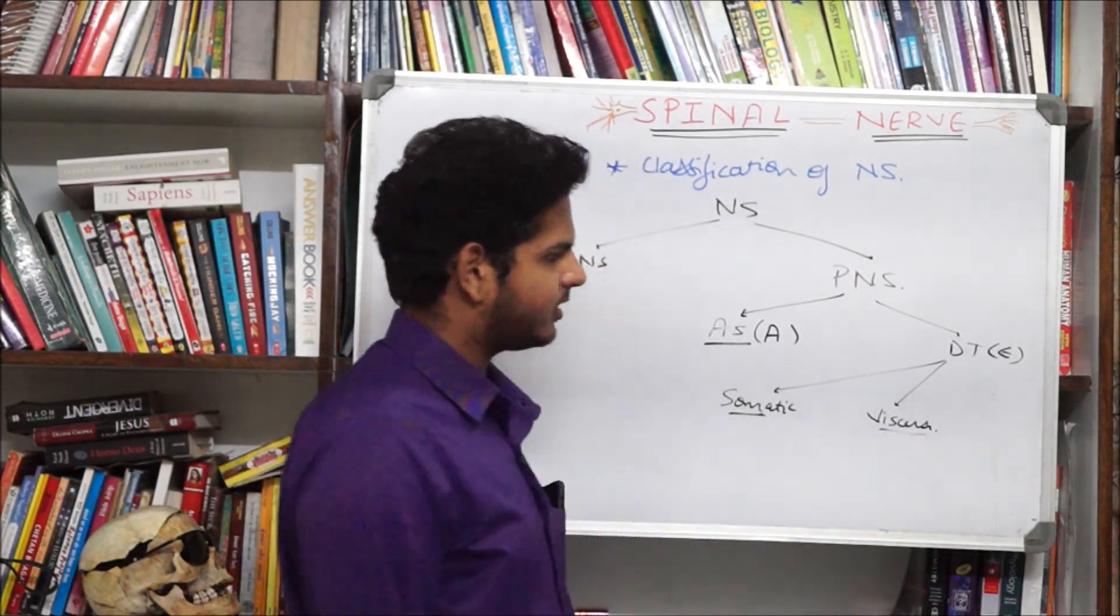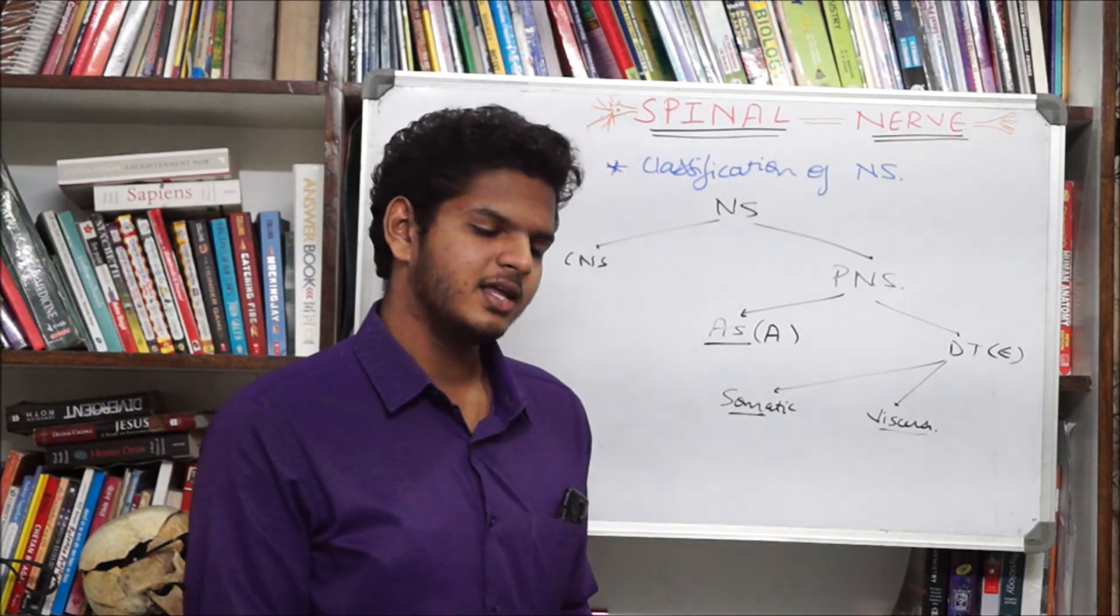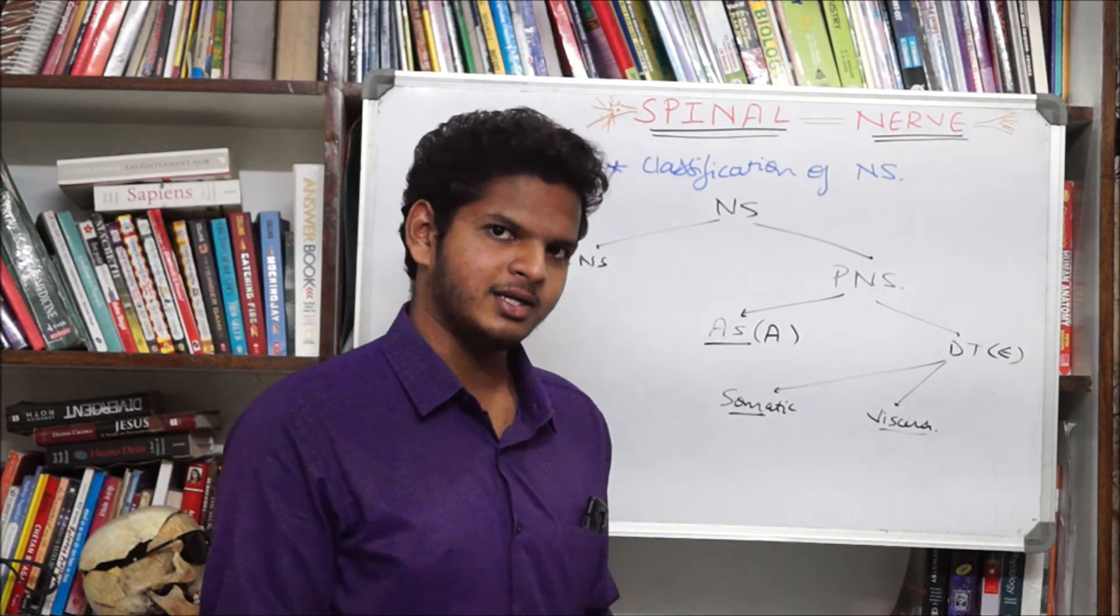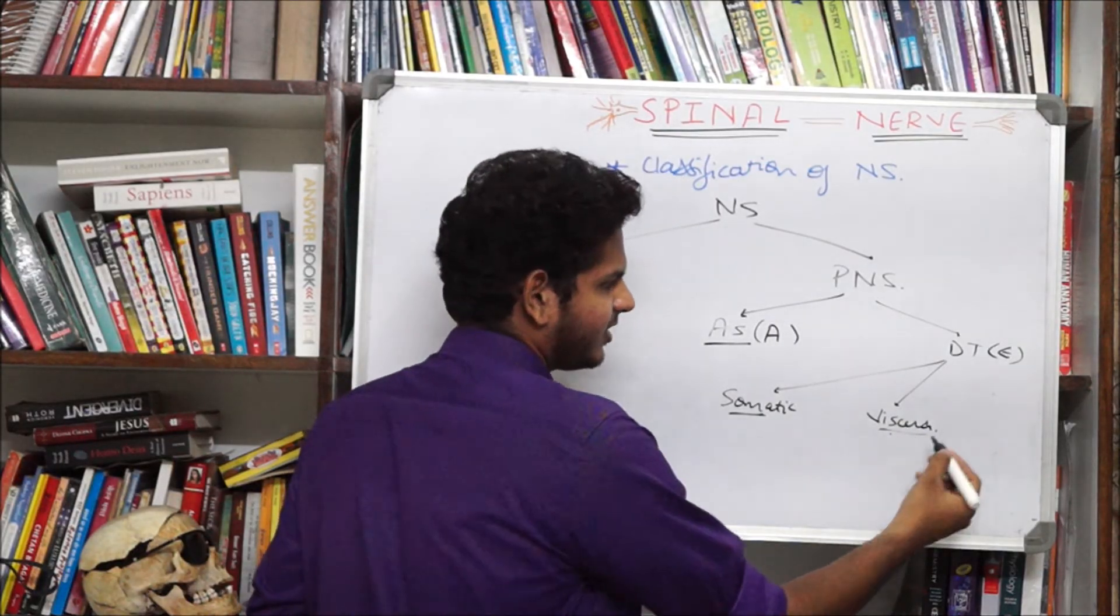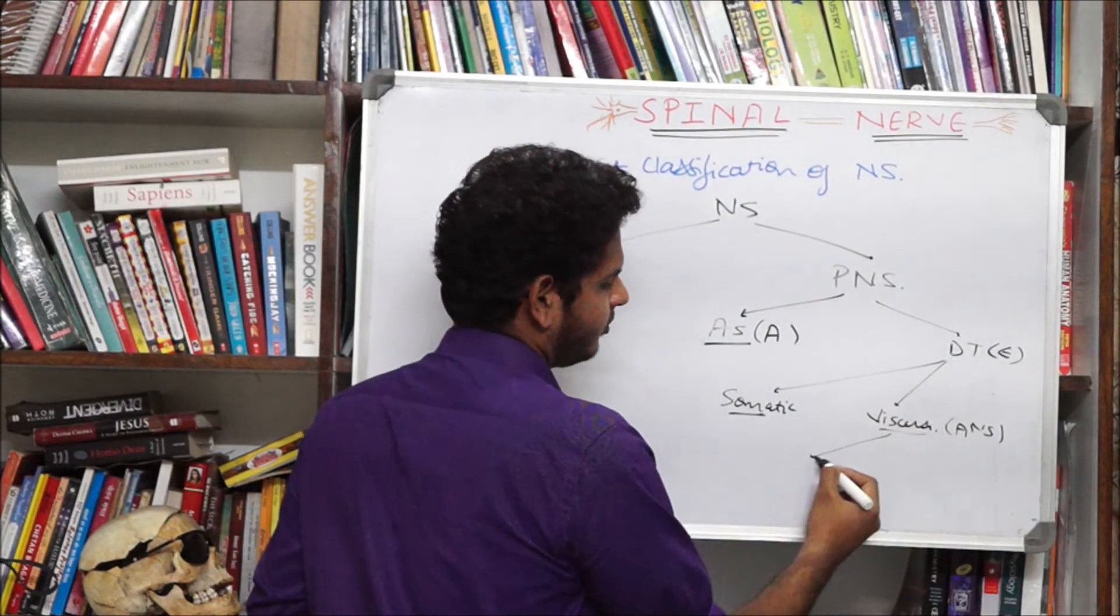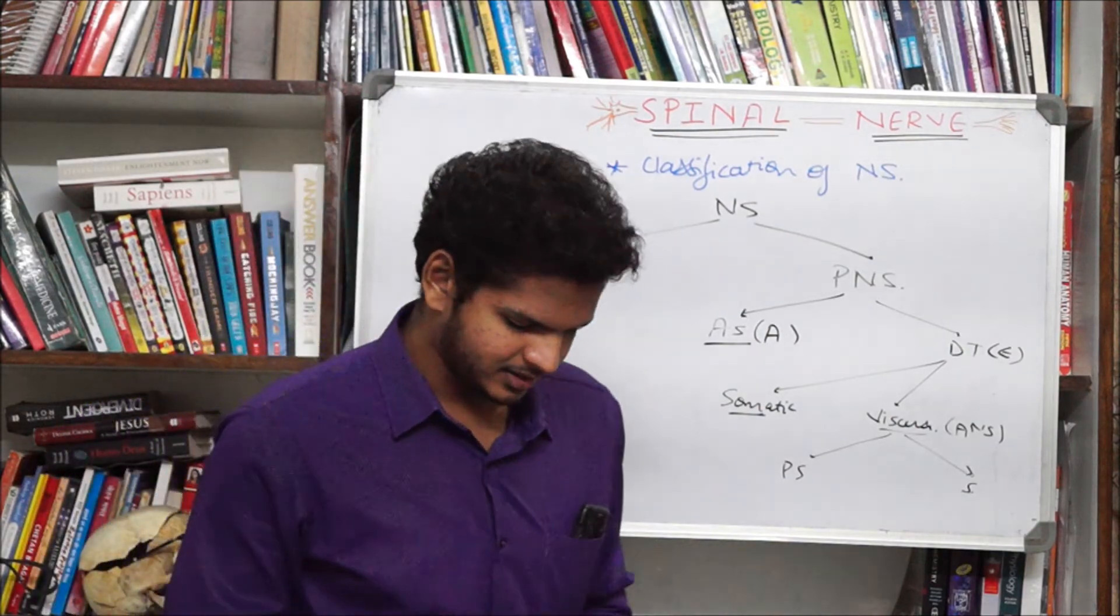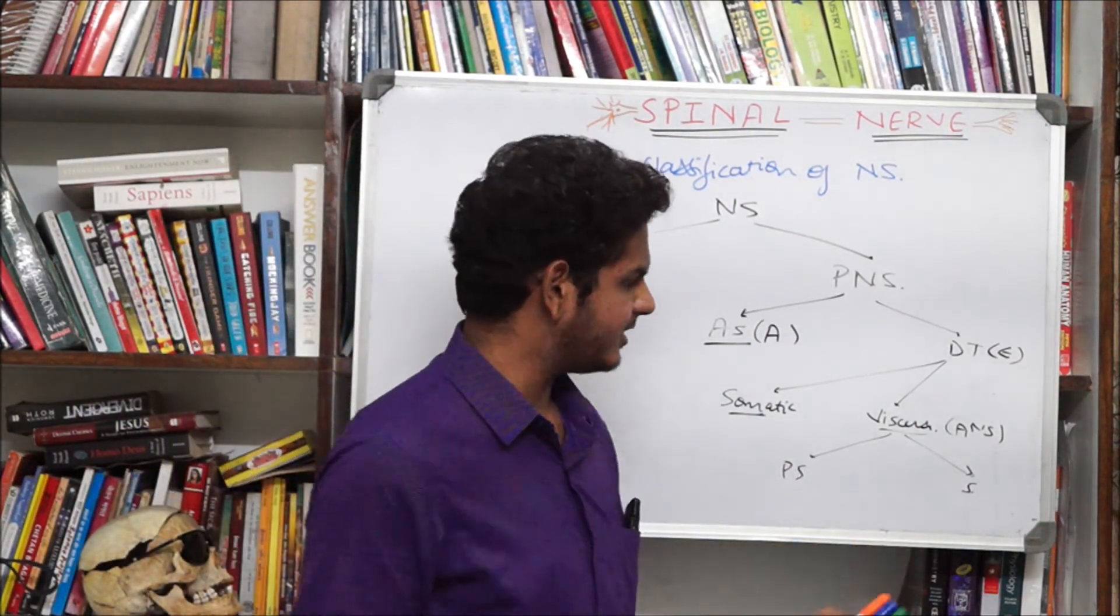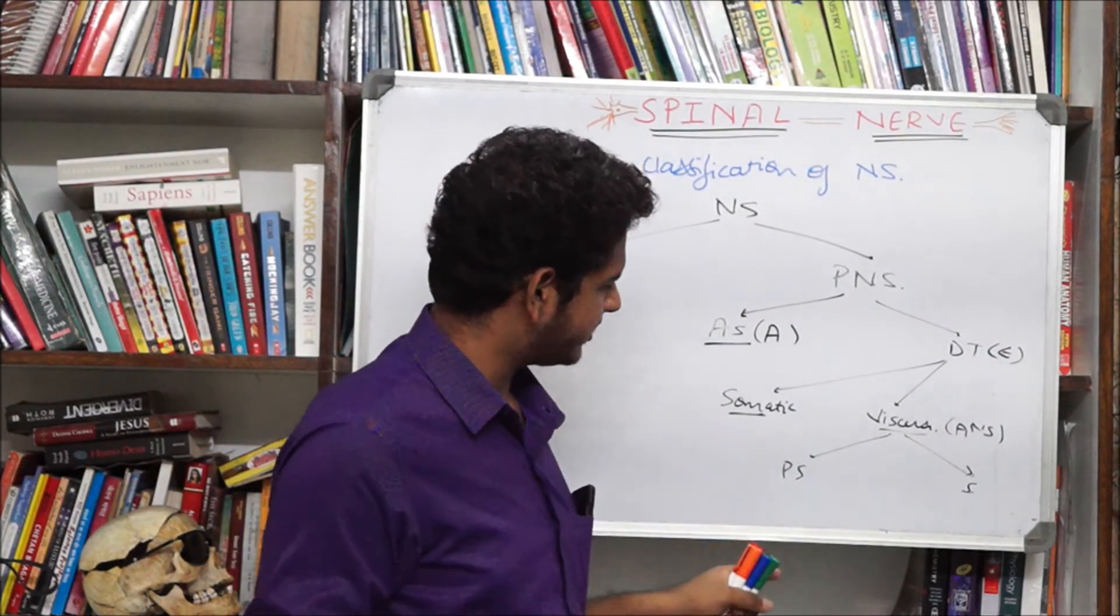Viscera are special because they are innervated not by motor neurons but they are actually innervated by different nerve endings which release different kind of chemicals. So this can be divided into autonomic nervous system. This is actually the autonomic nervous system. Visceral is autonomic nervous system. Autonomic nervous system is divided into parasympathetic and sympathetic. Parasympathetic nervous system is a separate branch of the ANS and sympathetic is the separate branch of ANS.